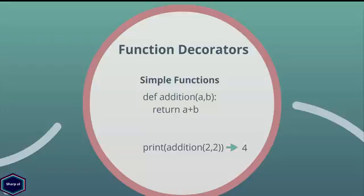In this example I have an addition function which takes two arguments and returns their sum. Now in main I call my addition function. As you can see I get integer value 4 as a result. So far everything was very simple and straightforward.